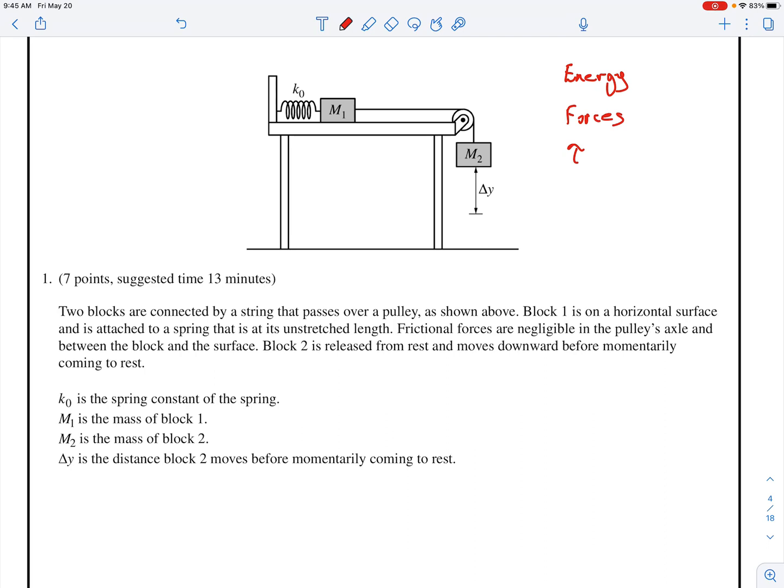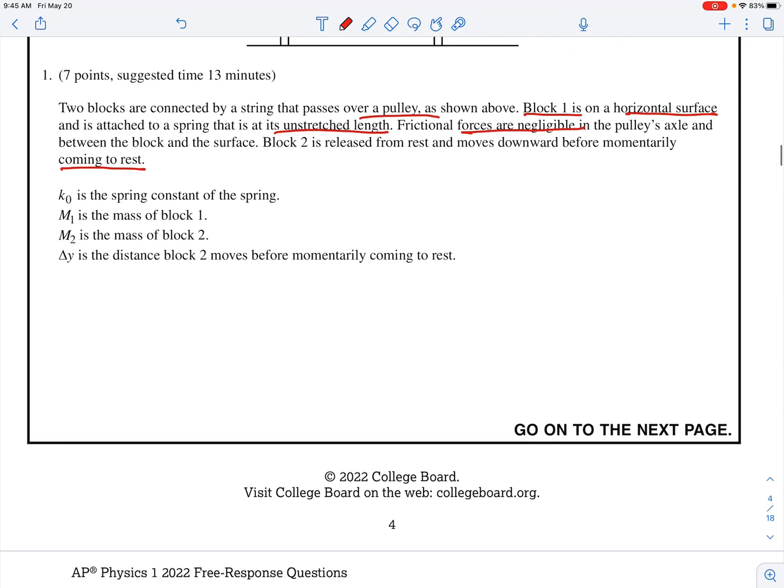Two blocks are connected by a string that passes over a pulley, as shown above. Block one is on a horizontal surface and attached to a spring that is unstretched. Frictional forces are negligible. Cool, that means we don't have any friction to worry about. Block two is released from rest and moves downward before momentarily coming to rest. They give you the spring constant K, they give you the mass M2, and they give you the distance delta y that it goes before it's momentarily at rest.